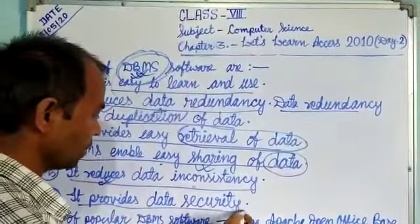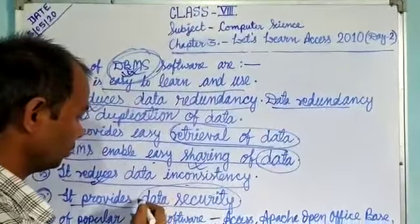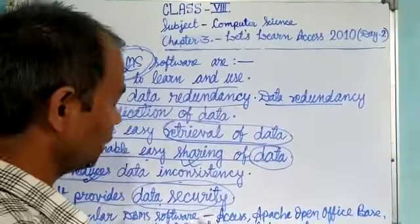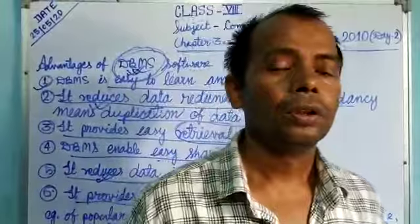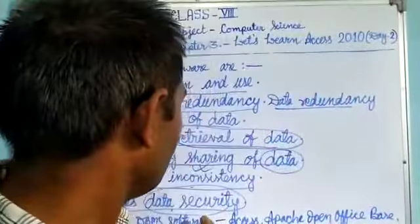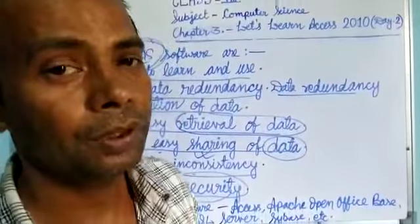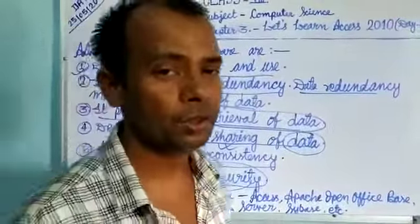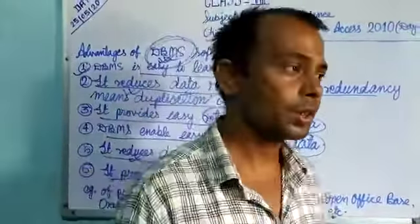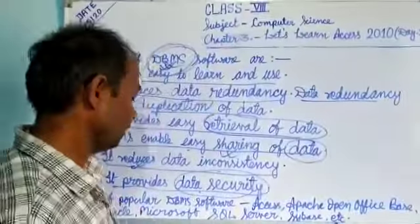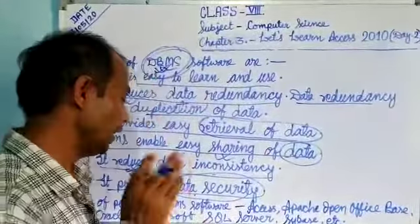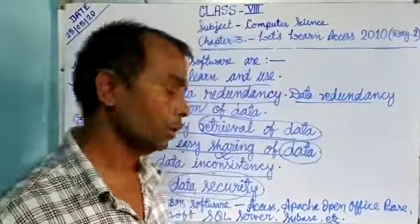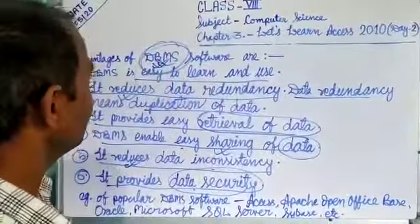DBMS provides data security. Through DBMS, data security is maintained — not every person can access the data. They need to take permission to access it. Only if they are granted permission can they access that data. So this is another important benefit of DBMS.